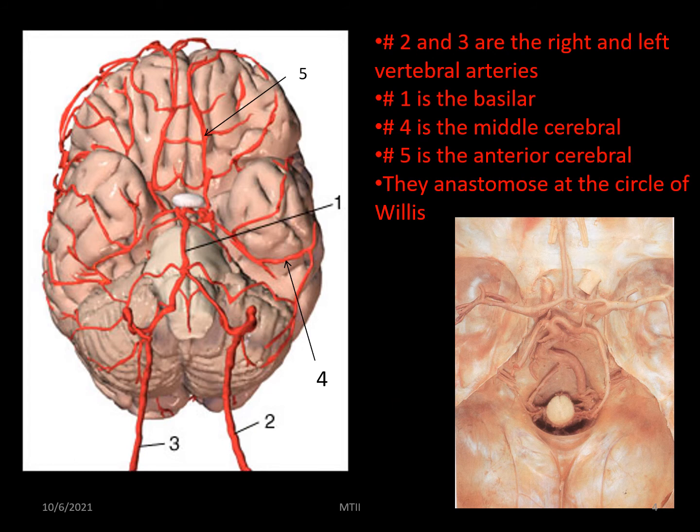The slide on the left is a diagram showing an idealized version of the systems. That on the right is from a dissection. Note the common variant where one artery is larger than the other.